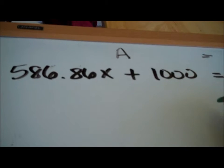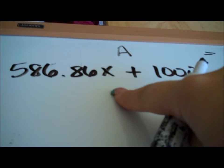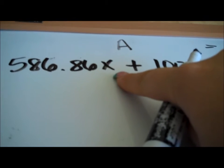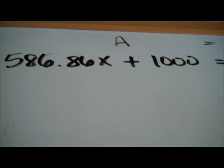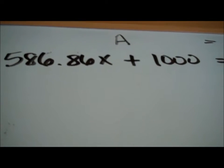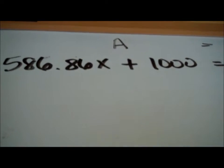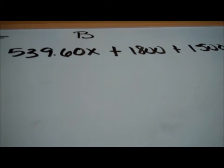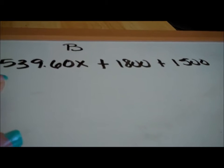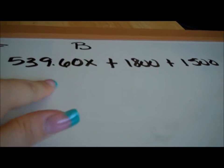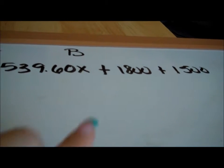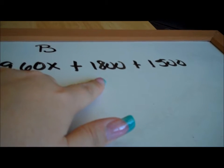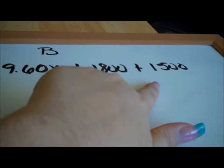On the left hand side we have Bank A: the monthly payment of $586.86 times x months, plus the $1,000 closing cost. On the right hand side we have Bank B: the monthly payment of $539.60 times x months, plus the 2% fee of $1,800, plus the $1,500 closing cost. The two constants on Bank B's side — $1,800 plus $1,500 — add together to give $3,300.